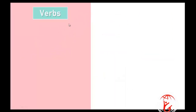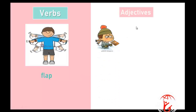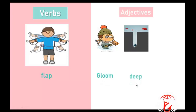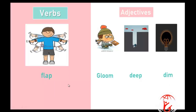Now a group of verbs. The first one is 'flap' — it means to move your arms up and down. And these are adjectives. The first one is 'gloomy.' The second one is 'deep,' like the title — do you remember? And the third one is 'dim' — it's not light, it's dim.